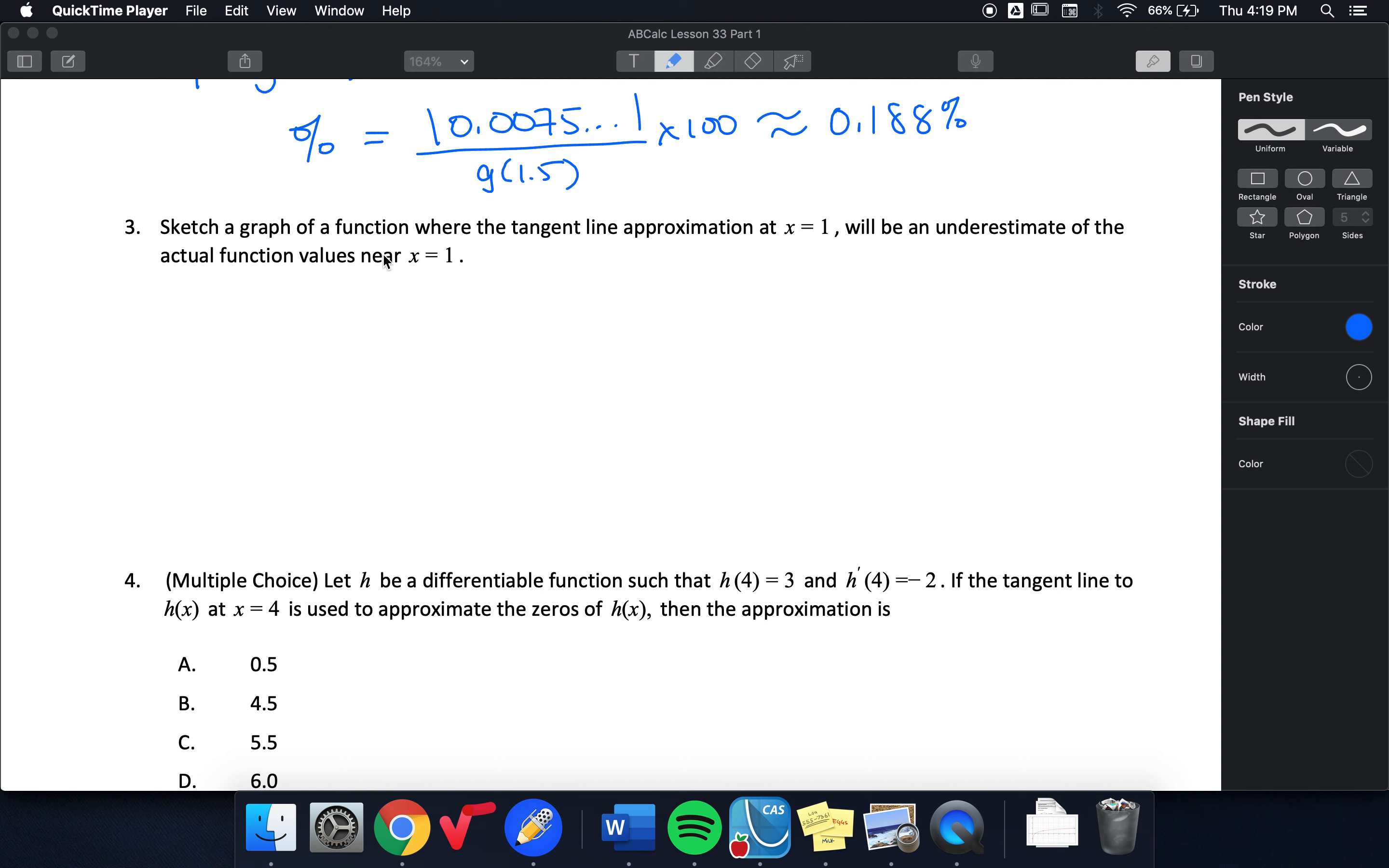All right, this question asks me to sketch the graph of a function where the tangent line approximation at x equals 1 is an underestimate of the actual function. So that means I'm going to want my tangent to be underneath the graph. That means I'm going to want it to be concave up.